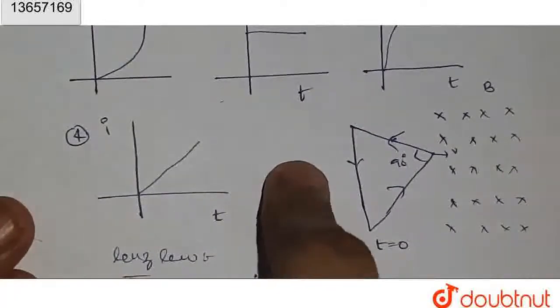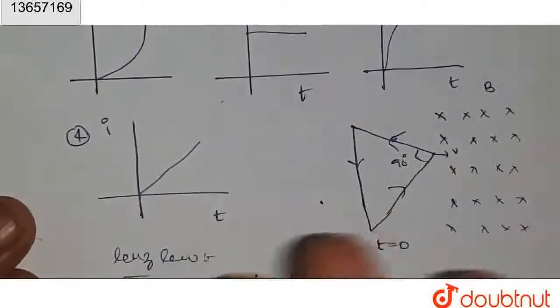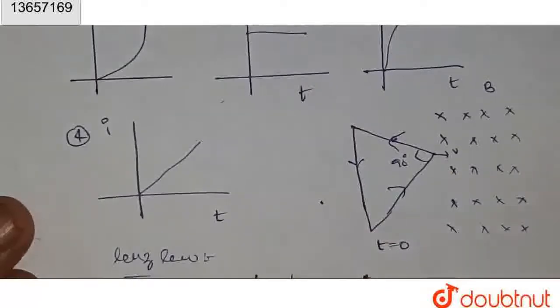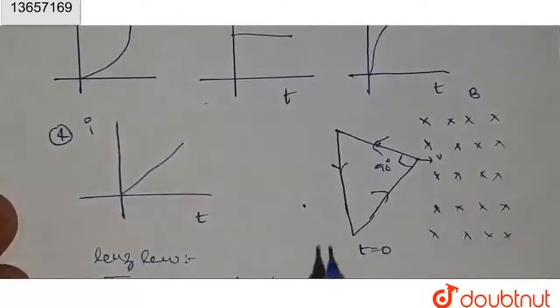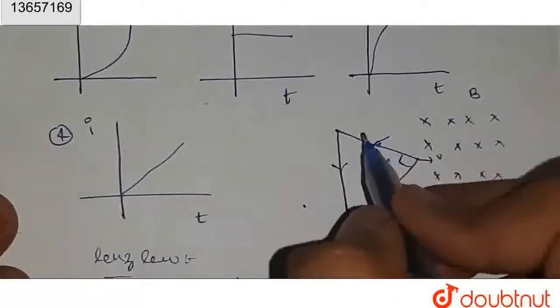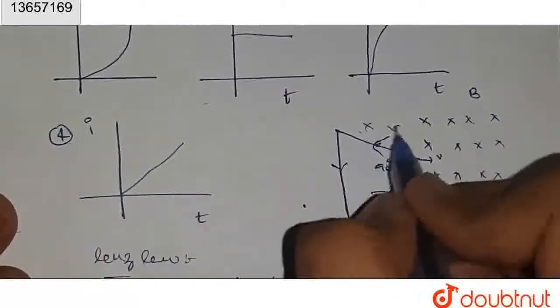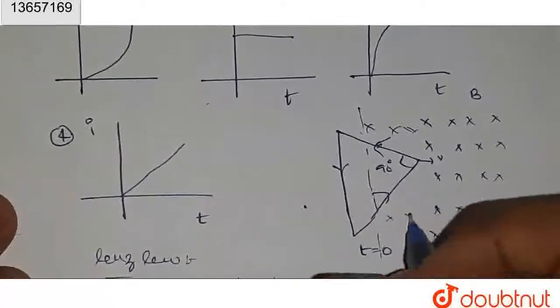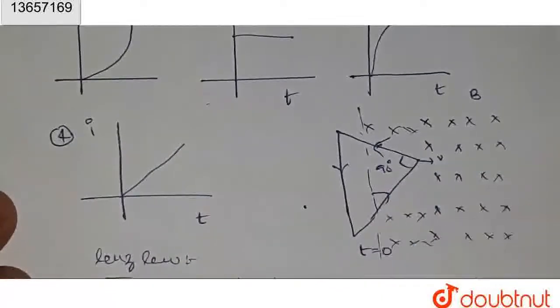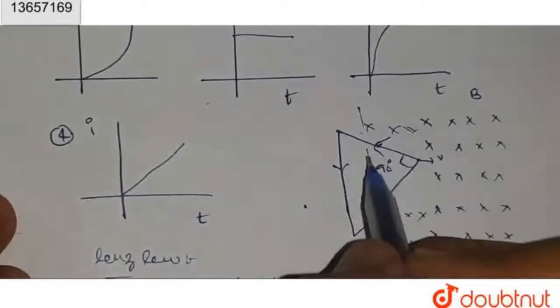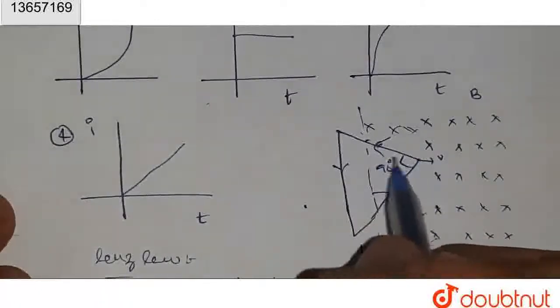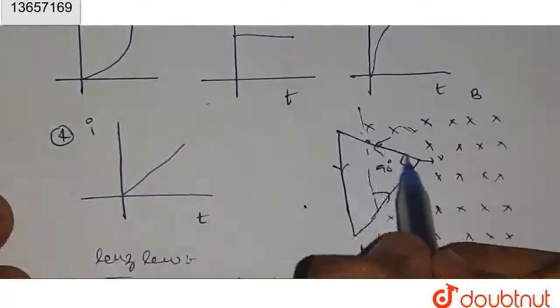The total length is perpendicular to the field because our field is into the paper and our conductor is in the plane. In both of these angles, it will be 90 degrees. Let us take up to this. What will happen here?